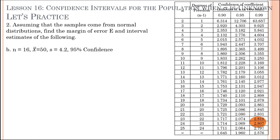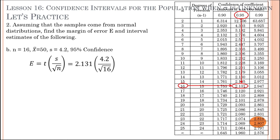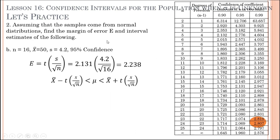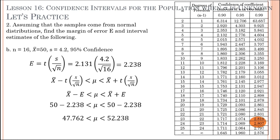For the next problem: n equals 16, sample mean is 50, sample standard deviation is 4.2, at 95% confidence. The t-value at n equals 16 and 95% is 2.131. Using the margin of error formula with S equals 4.2 and n equals 16, the margin of error is 2.238. For the interval estimate: 50 minus 2.238 and 50 plus 2.238 gives 47.762 to 52.238.